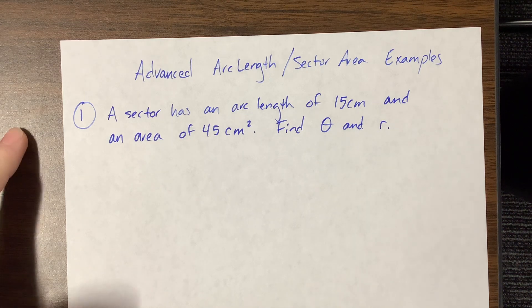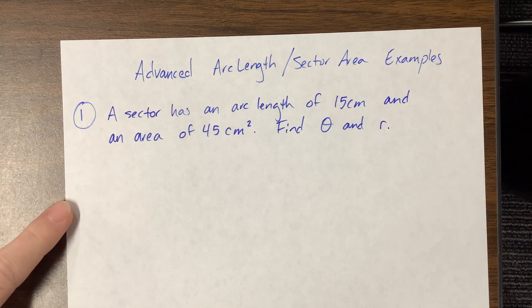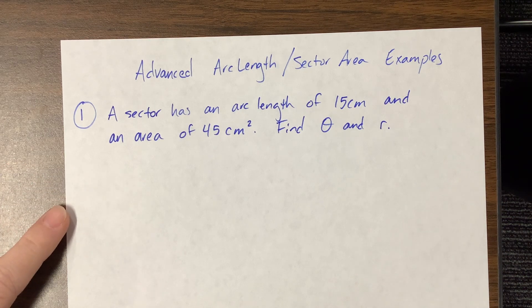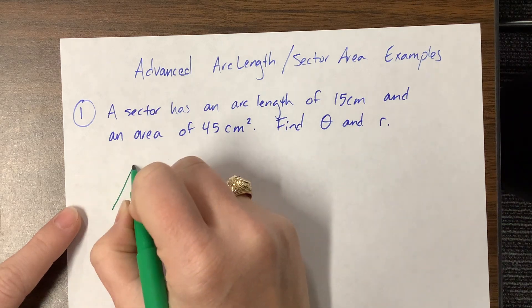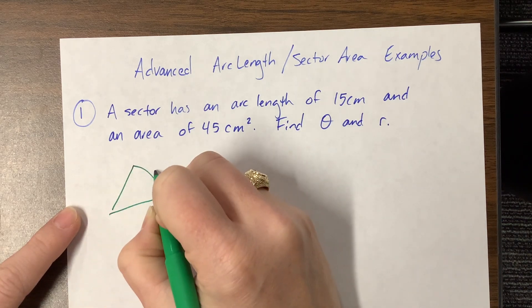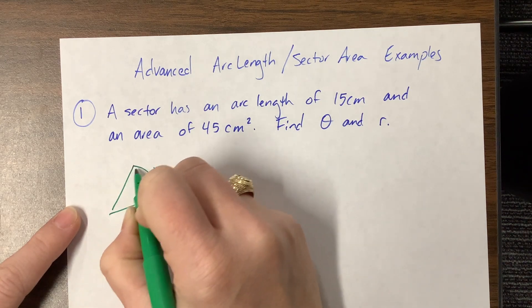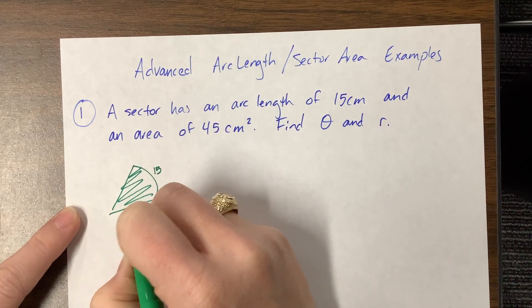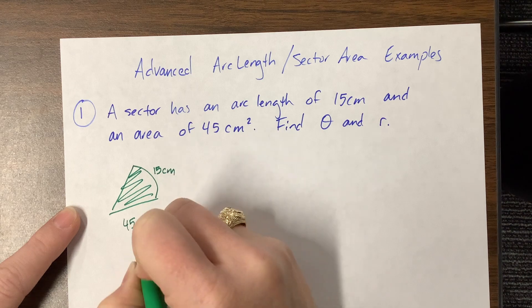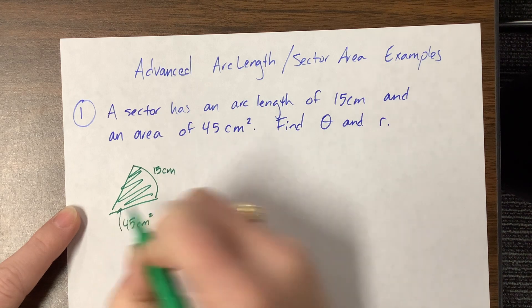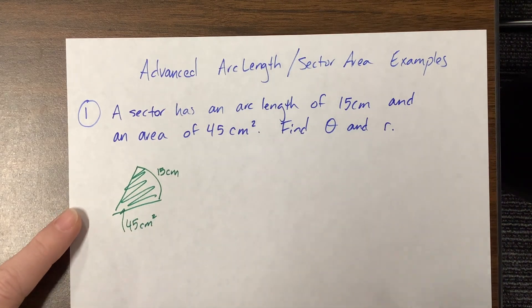So this first one, they tell us a sector has an arc length of 15 centimeters and an area of 45 centimeters squared. So you could kind of think of it as this length right here is 15 and then the entire area is 45. That's centimeters, this is centimeters squared. I don't know that picture helps us but that's kind of what we're looking at.